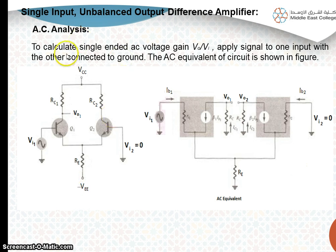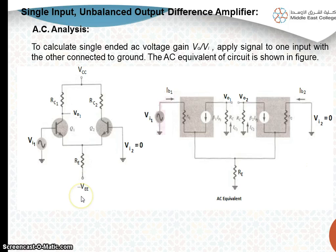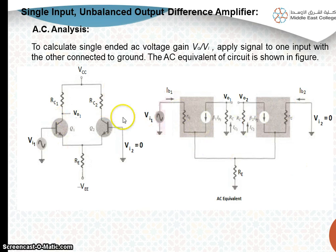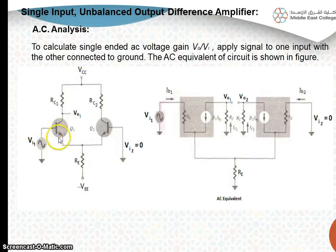For discussing the AC analysis, we need to consider only the AC input voltages. Assume that all the DC voltages are equal to zero — that means VCC and minus VEE are zero — so in AC analysis they will be connected straight to ground. Before drawing the AC equivalent of this differential amplifier, let me remind you of the small signal equivalent or AC equivalent of a transistor.